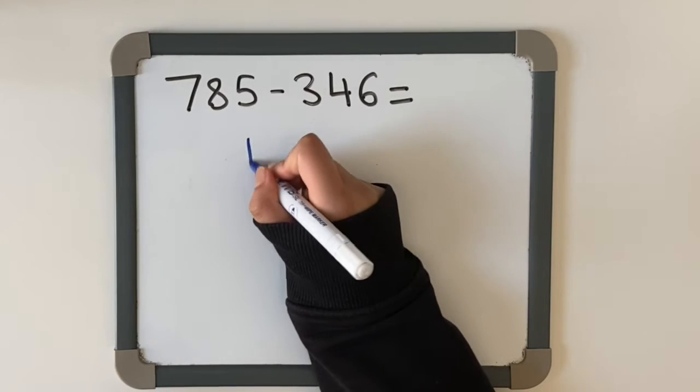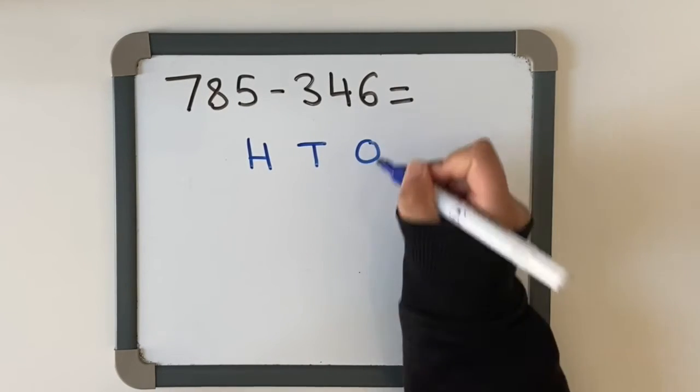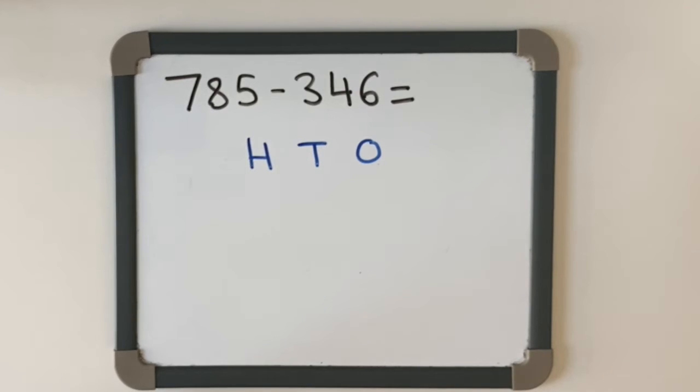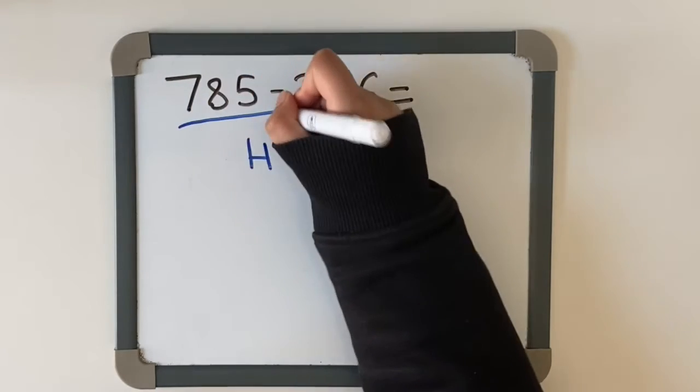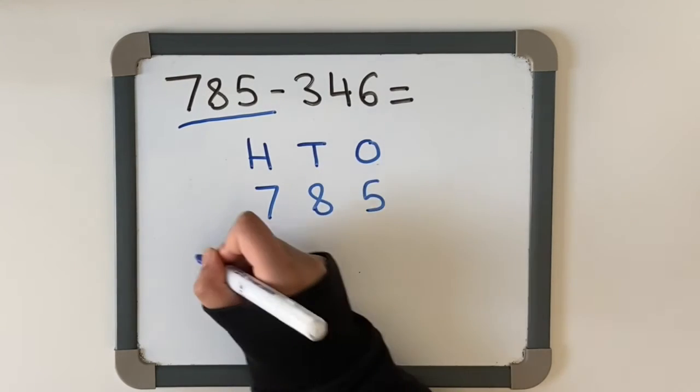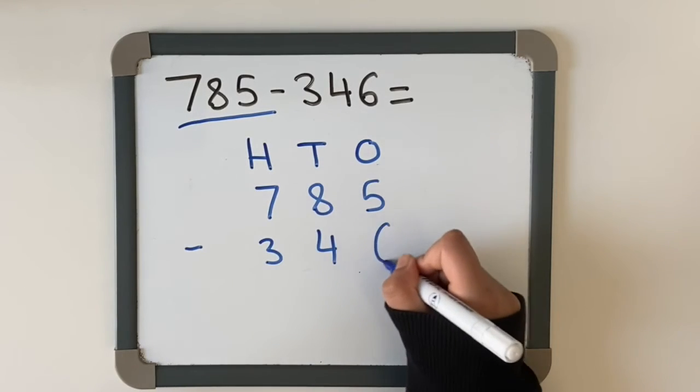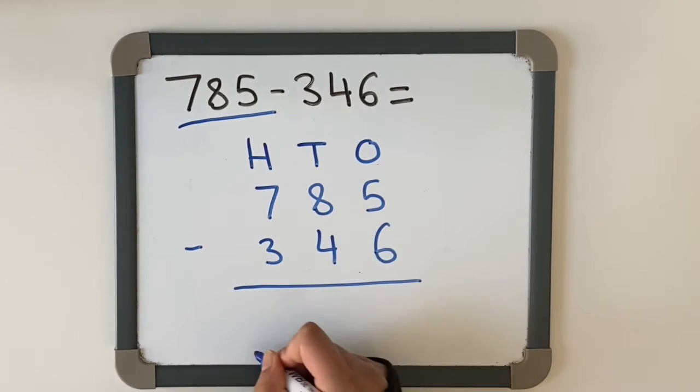In our hundreds, tens, and ones columns, I am going to start off with the bigger number, which is going to be 785. I'm going to subtract that by 346. Now we can start. We can't do five take away six.